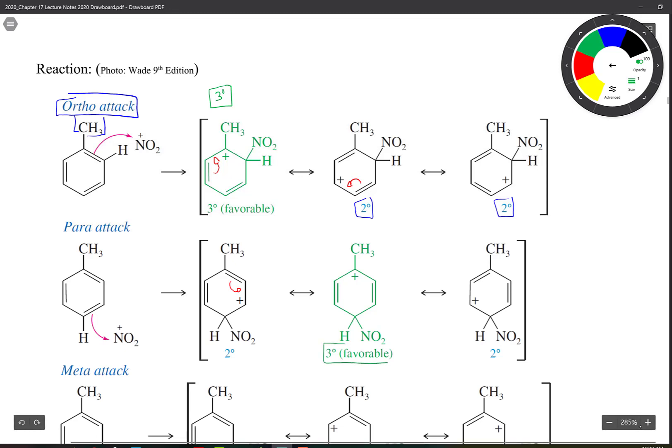It's the most favorable of the three. And then moving around with our arrows, getting our plus charge at the other bottom shoulder, the side of where that nitro group is.